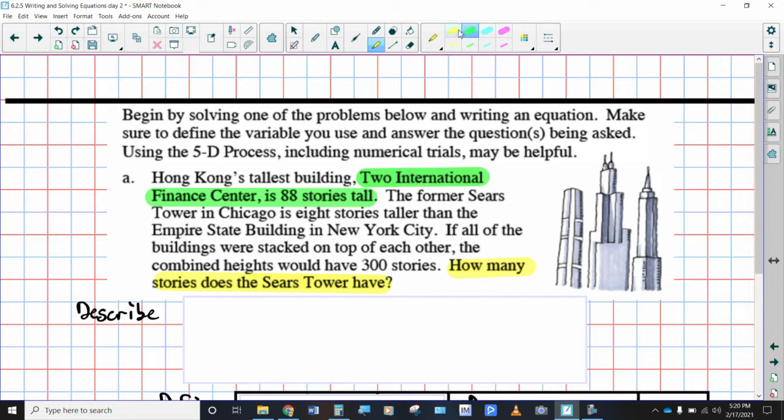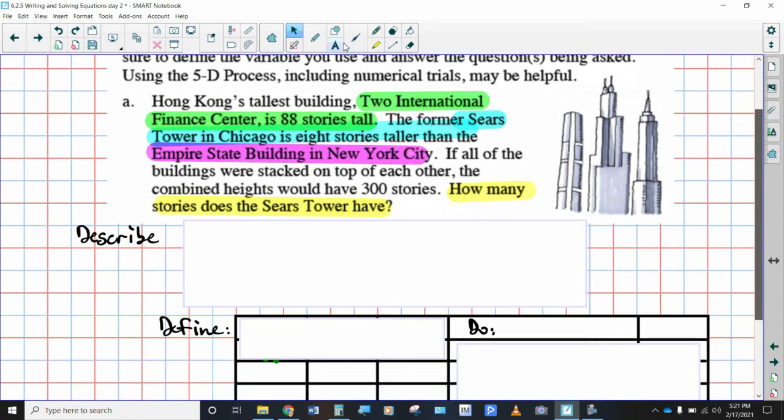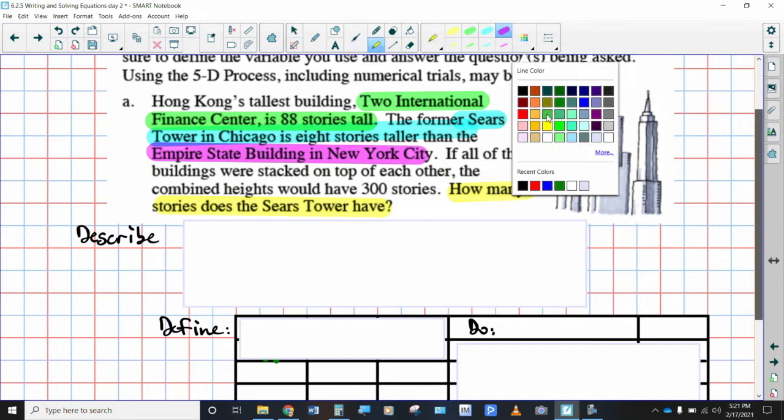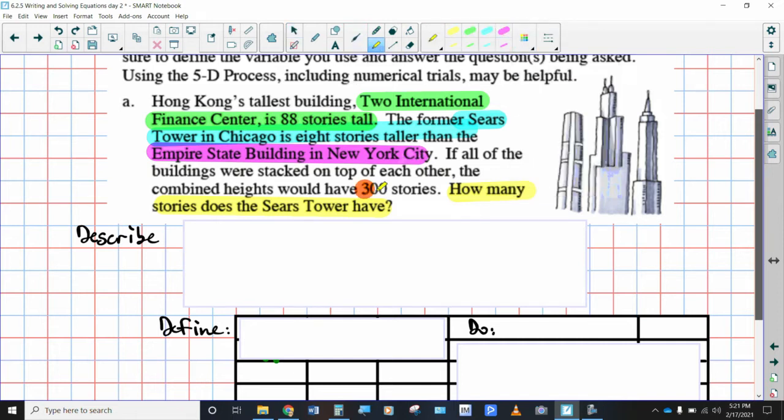Now the former Sears Tower, let's highlight this in blue. The former Sears Tower in Chicago is eight stories taller than the Empire State Building. So it looks like the Sears Tower is compared to the Empire State Building and then this Two International Finance Center, it's not even a variable. They tell us how tall this one is. So great. That's 88 stories tall. So when we go through and we describe this, we have three different towers. And I think there's one more thing for me to highlight here is what is the total of 300 stories.